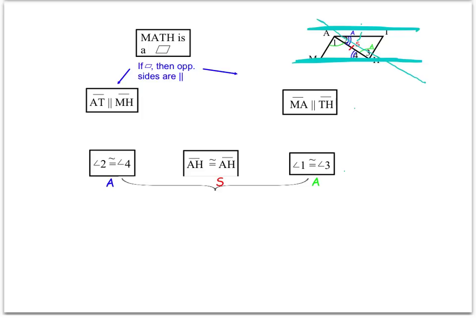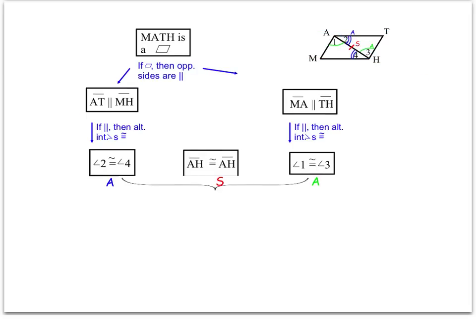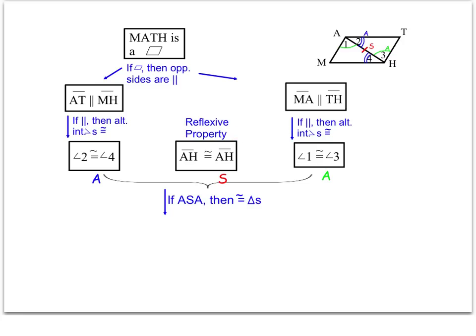Now that I have the two sets of parallel sides identified, I can look on my DPT sheet and see the theorem that says if I have parallel lines, then I have congruent angles. These are alternate interior angles, so the flow proof reads: if parallel, then alternate interior angles are congruent. Same thing on the other side — if parallel lines, then alternate interior angles are congruent. That takes care of the two angle pieces. For AH being congruent to AH, you need to remember that's the reflexive property — whenever something is congruent to itself.